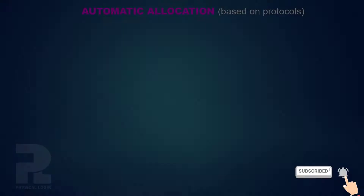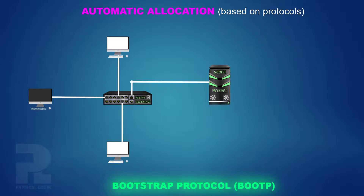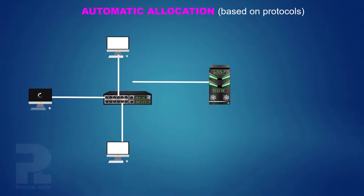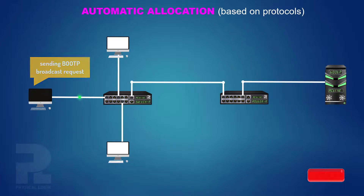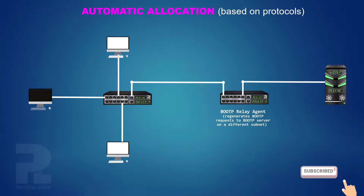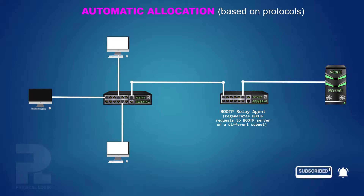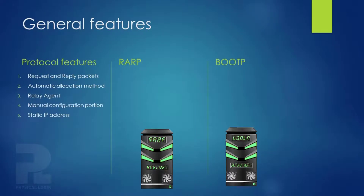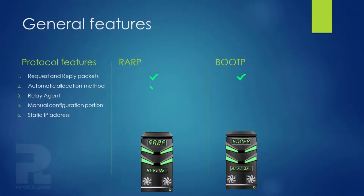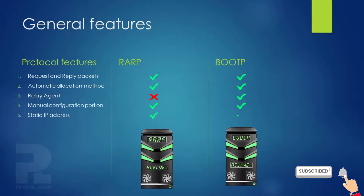Another protocol is the Bootstrap Protocol, denoted as BootP. It functions similarly to RARP. However, the main difference is that BootP functions across multiple network segments with the help of a BootP relay agent, while RARP — which does not have a relay agent — only functions at the link layer since broadcasts cannot be forwarded across networks. These protocols, although automatic, still require some manual configuration, as their protocol packets cannot carry all the information that may be required by the client.